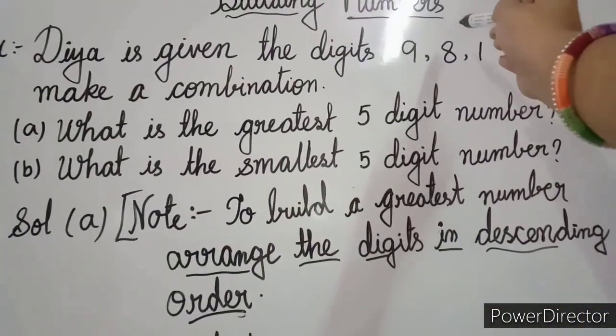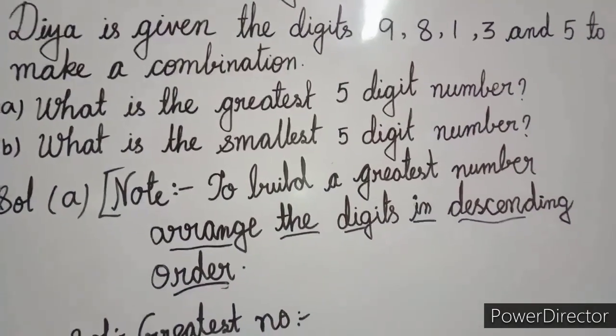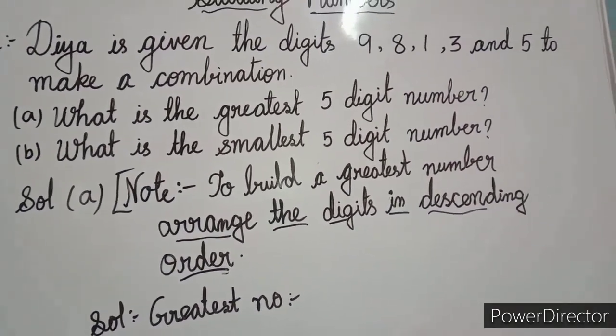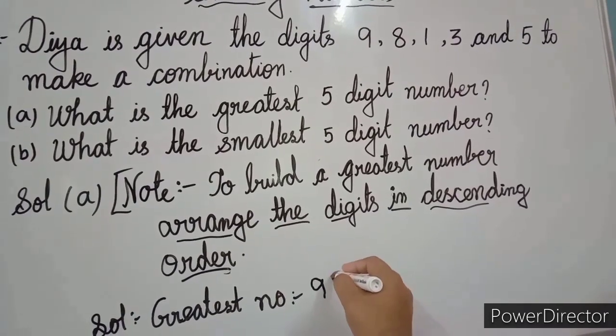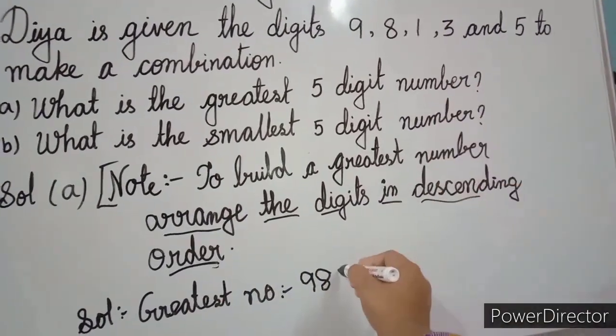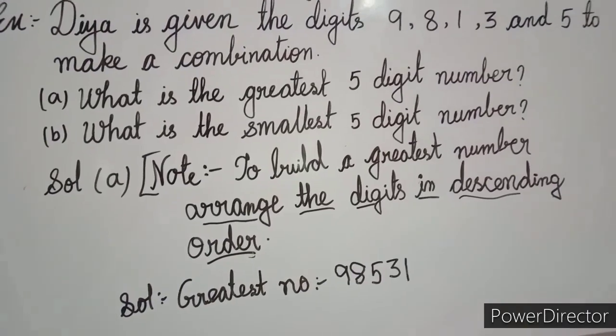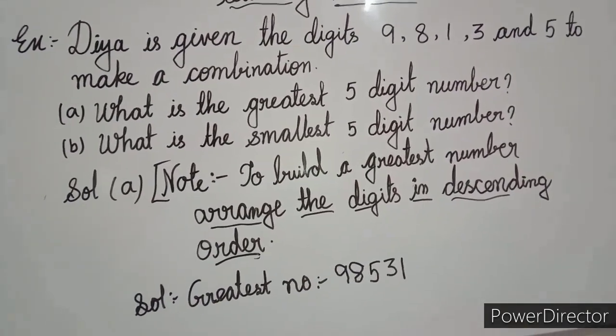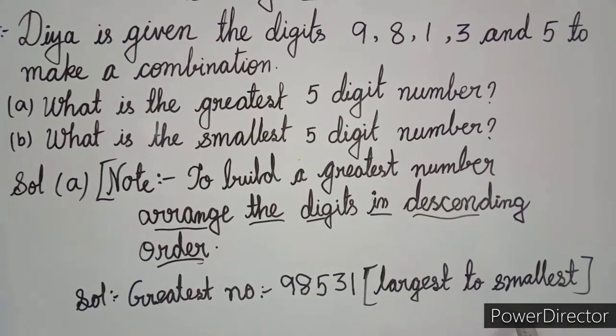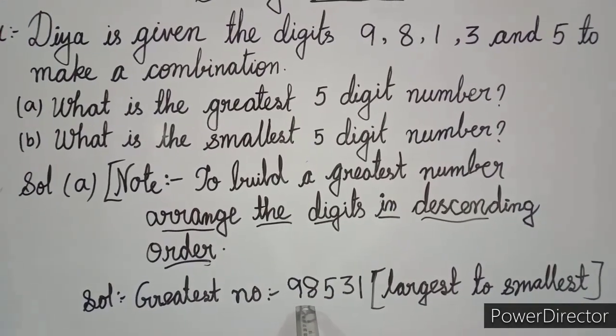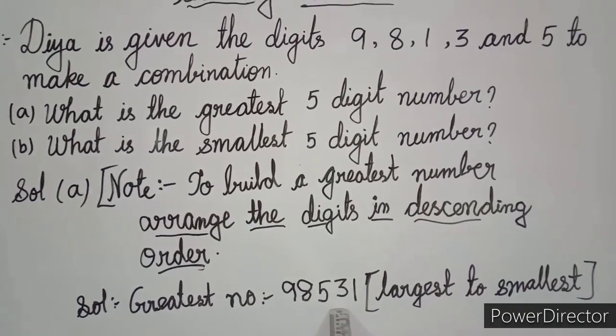So here are the digits. What are the digits? 9, 8, 1, 3 and 5. So the greatest number will be, at first in descending order, 9, then 8, then 5, then 3 and last one is 1. So the greatest number is 98531. The greatest number is largest to smallest. First number is large and the last number is small. So largest to smallest.